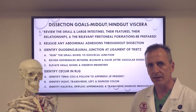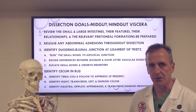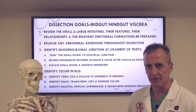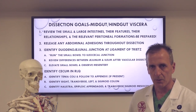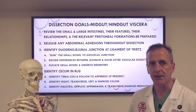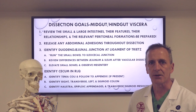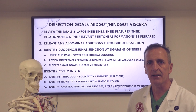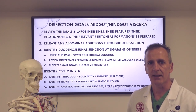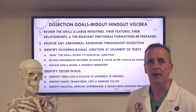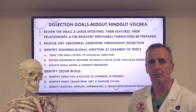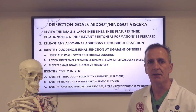Your first step will be to identify the duodenal junction at the ligament of Treitz, an extension of the right crus of the diaphragm that suspends this junction in the left upper quadrant. This marks the beginning of the jejunum, and from that point you'll want to run the small bowel from the ligament of Treitz to the ileocecal junction. Running simply entails passing the small bowel through your hands and appreciating its length and its attachment to the posterior abdominal wall.